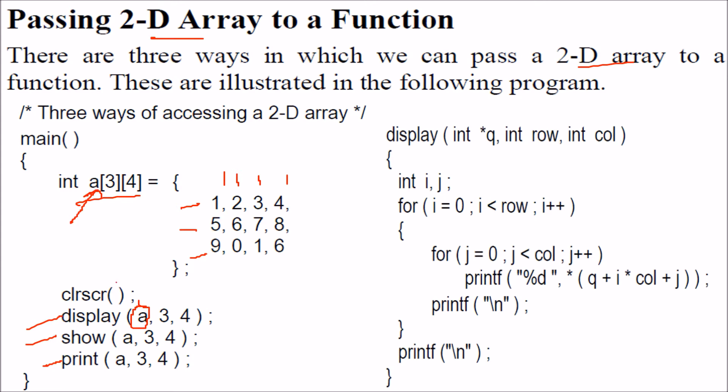First, this is the display function in which we are passing the address, so we have to take it in some pointer with row and column. We know that first we have to go to the proper row, so the first loop goes through rows, and then inside this row we go through columns. This q is actually pointing to the first location. This q is always pointing to the starting address of the array.